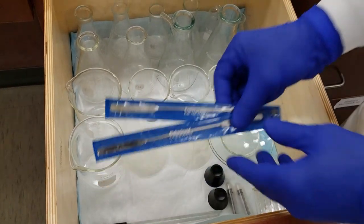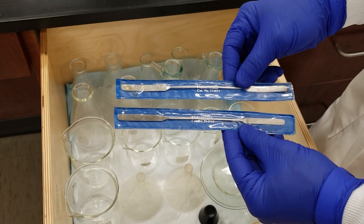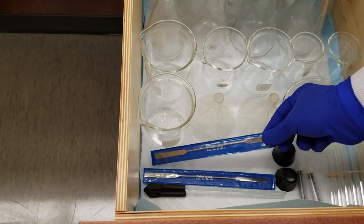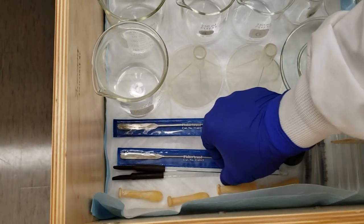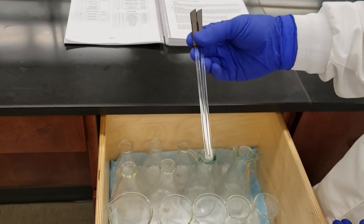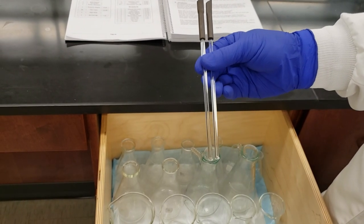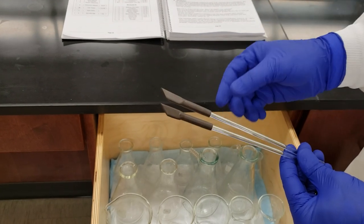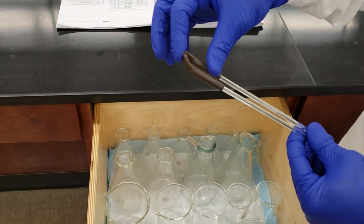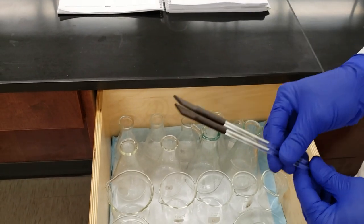Next are our spatulas, metal spatulas or scoopulas for measuring out powders. We've got two glass stir rods to stir and help induce crystallization during recrystallization experiments. Attached to these are rubber policemen, which are flexible and pliable, used to scrape crystals from watch glass, beakers, or flasks.